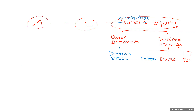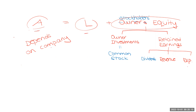And that's really going to depend on the company, because each company has different assets. One company might have delivery vehicles as one of their assets. Another might lease that delivery vehicle, so it'd be an expense. Each company's specific assets and liabilities are really going to depend on that company and their operations, whereas the equity section is pretty standard.